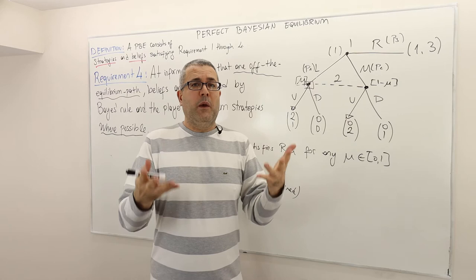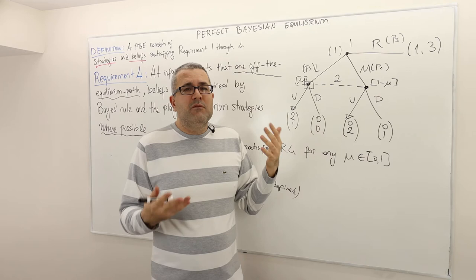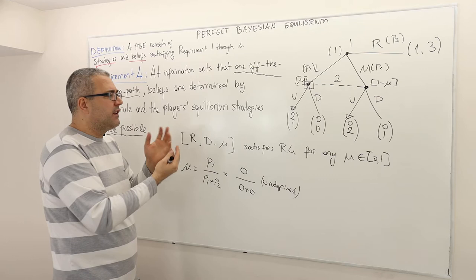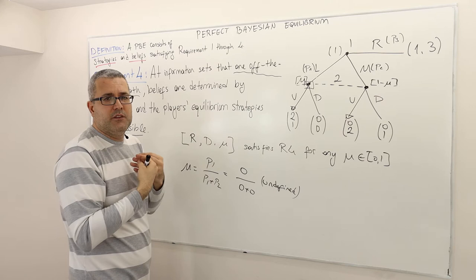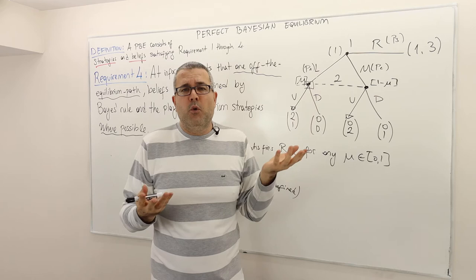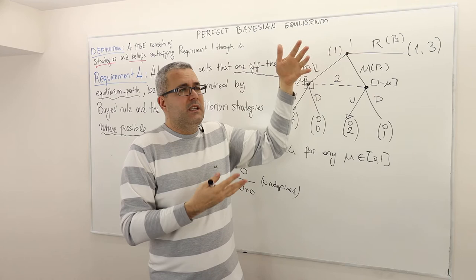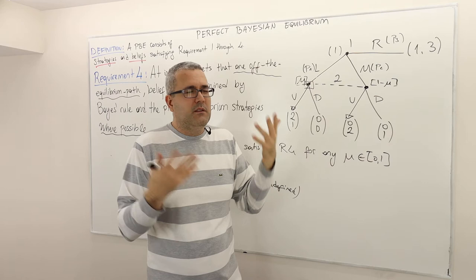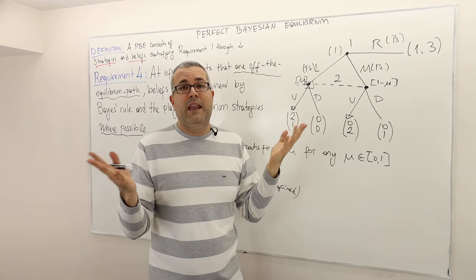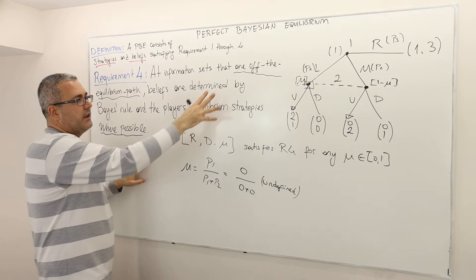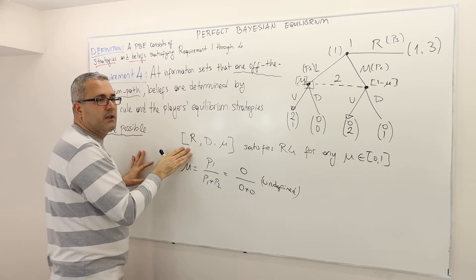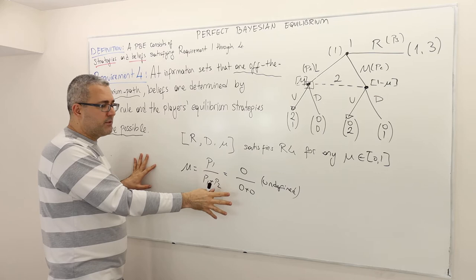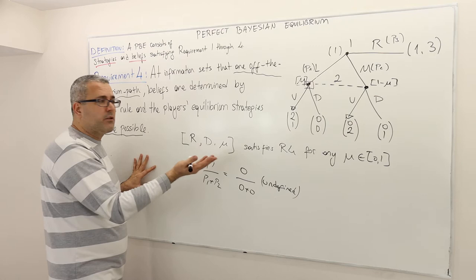In this case, what should her belief mu be? Remember, the idea behind requirements three and four is that your belief about your opponent's actions and mu must be consistent with each other. But here, no mu is going to be consistent with my opponent's strategy — it's like something unexpected happened, so I can believe anything. Therefore, requirement four says: use Bayes' rule if it gives a sensible outcome, but if it doesn't, then never mind — any mu satisfies requirement four.